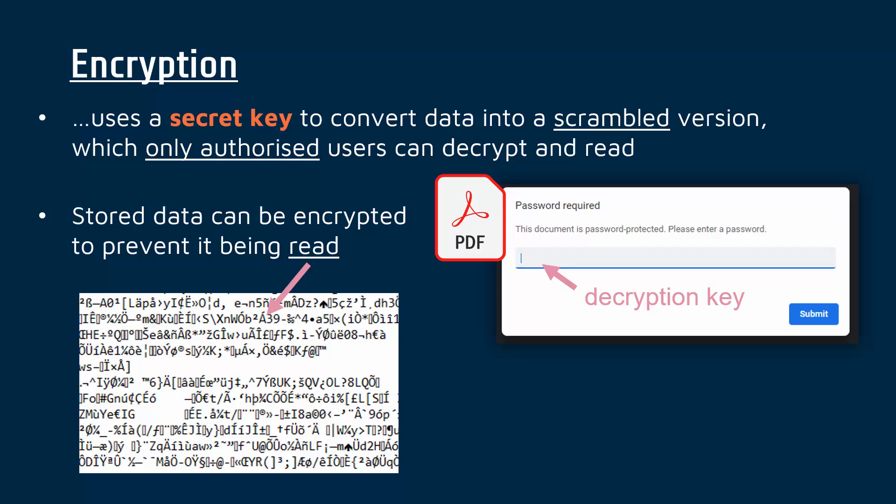If I try and open this file without entering the password, if I try and bypass that decryption key, I get just jumbled up, scrambled nonsense. I can't read it unless I've gone through the proper process of entering the decryption key and decrypting it. It's important to realise that encrypting a file does not stop an attacker being able to steal it and open it — but what it does stop them doing is being able to understand it. It doesn't help an attacker at all.